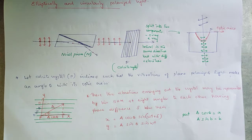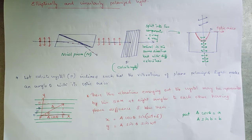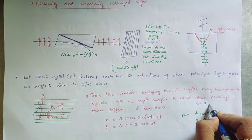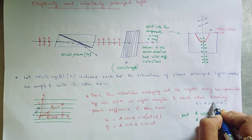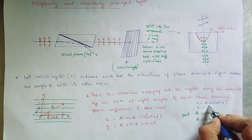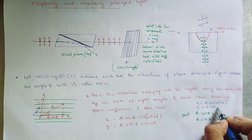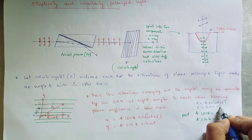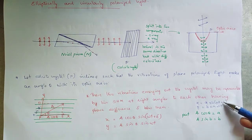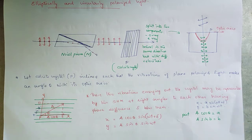There is a phase difference delta between them. We can adopt the equations for simple harmonic motion: x = A sin(ωt + δ), where δ is the phase difference, and y = B sin(ωt). These two amplitudes or waves have a phase difference of delta.